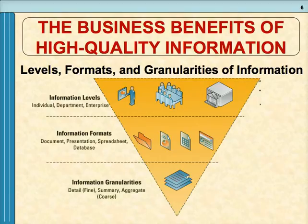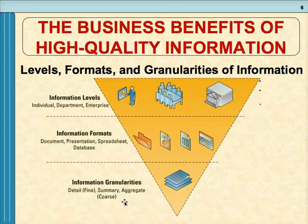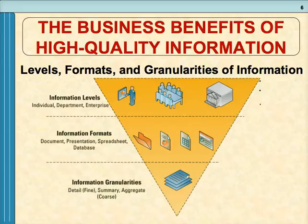When we talk about high-quality information, there are different characteristics. Granularity refers to how detailed your information is — you can have very detailed information, summary information, or aggregate information. These granularity levels correspond to the level of the organization using them: detailed information at the operations level, summary at mid-level managers, and aggregate information for strategic-level executives who also need to pull in outside information.